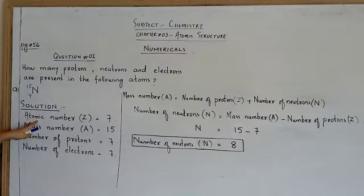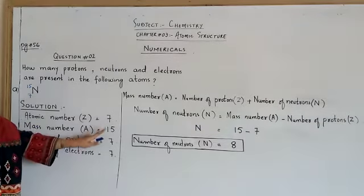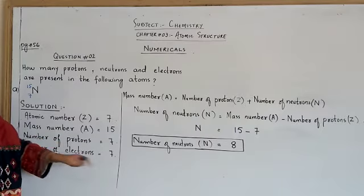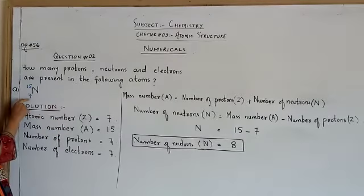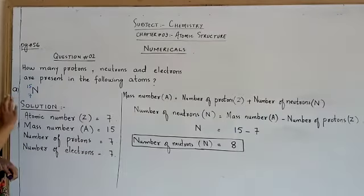Atomic number, which is the number of protons, is 7, and this is also the number of electrons. Got it? Protons and electrons equal the atomic number. So I have found out protons and electrons.